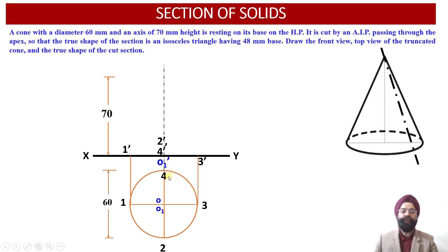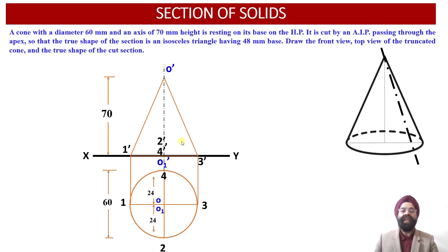Having marked all the points in the top view, we now evaluate the front view projections. Point O1 is projected as 1' onto the XY reference line. Points 2, O1, and 4 are projected as 2', 4', and O1' onto the XY reference line. Point 3 is projected as 3' onto the XY reference line. The height of the axis is 70 mm, so the apex point O' is located on the axis line. We then join O' to 1', 2', 3', and 4'.